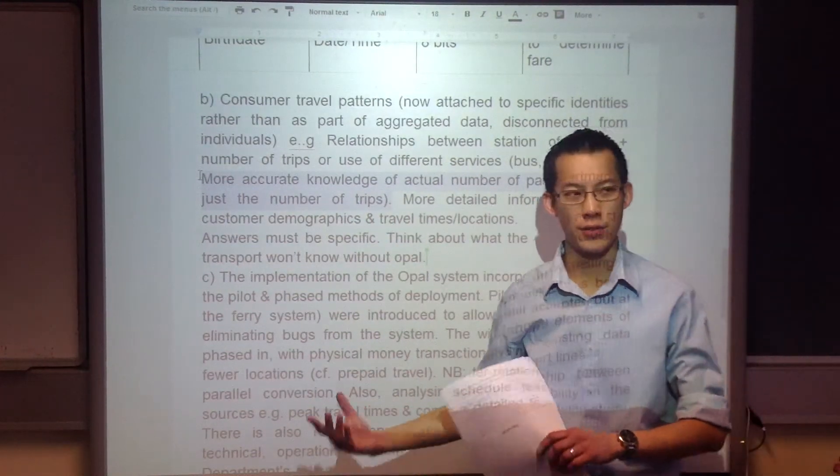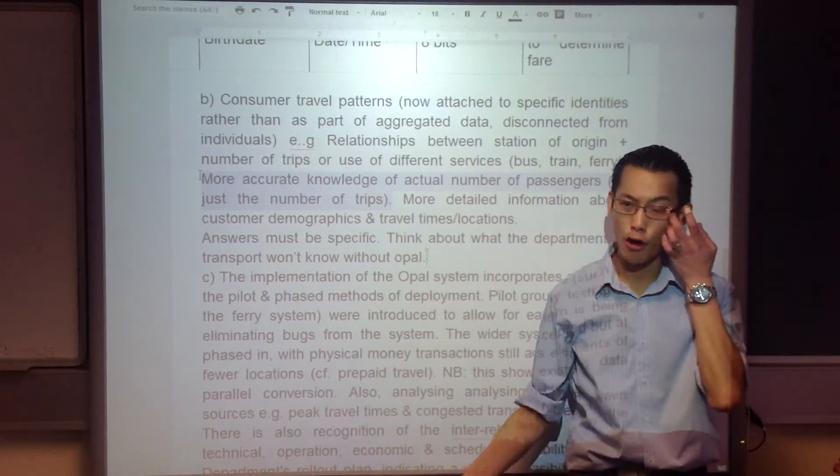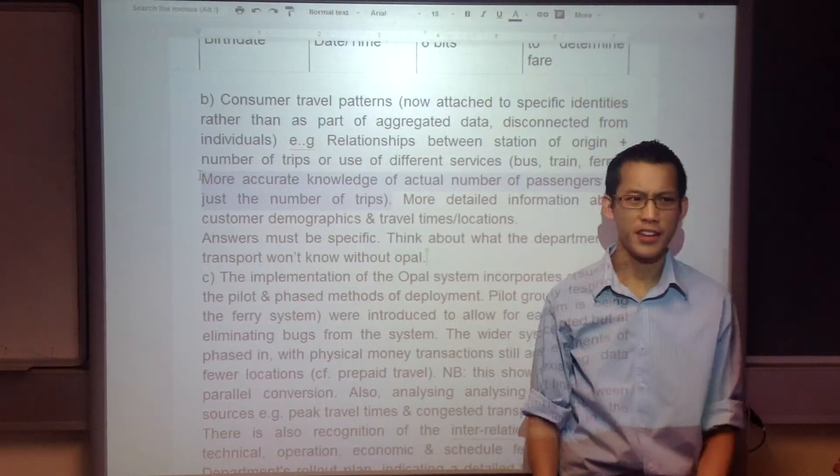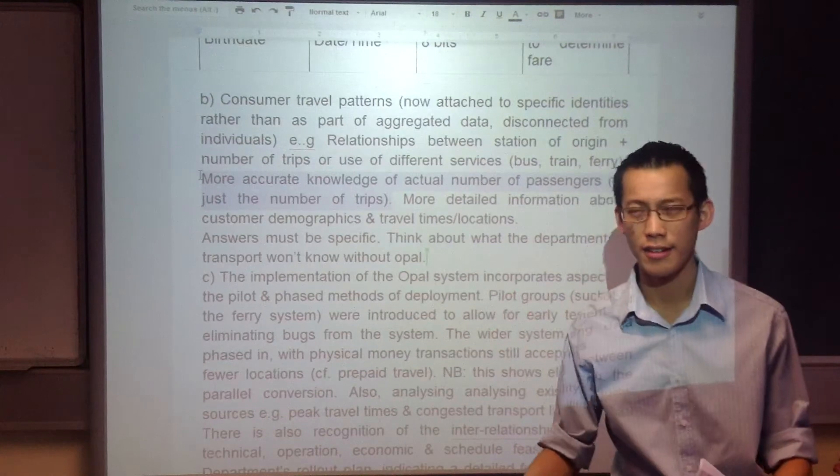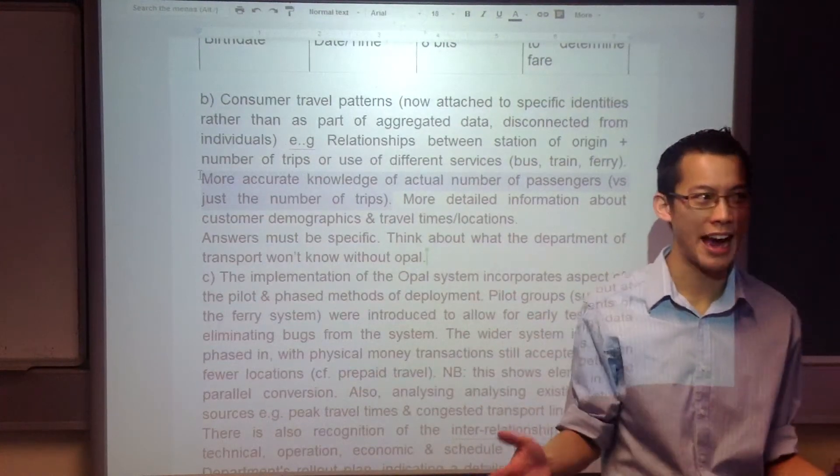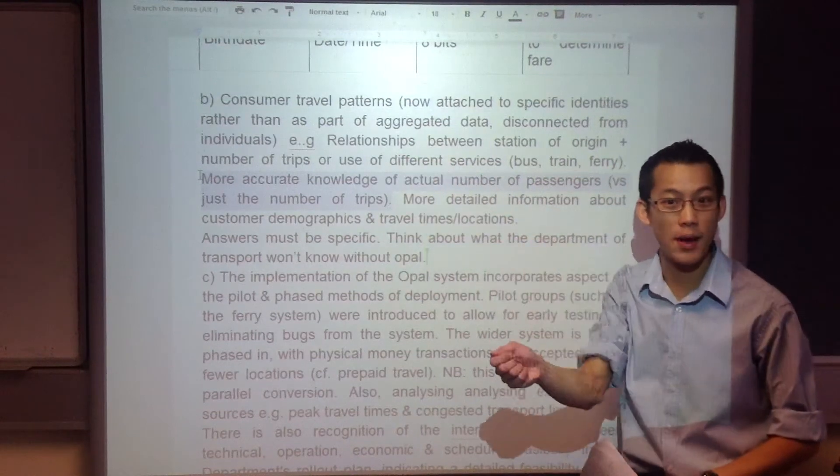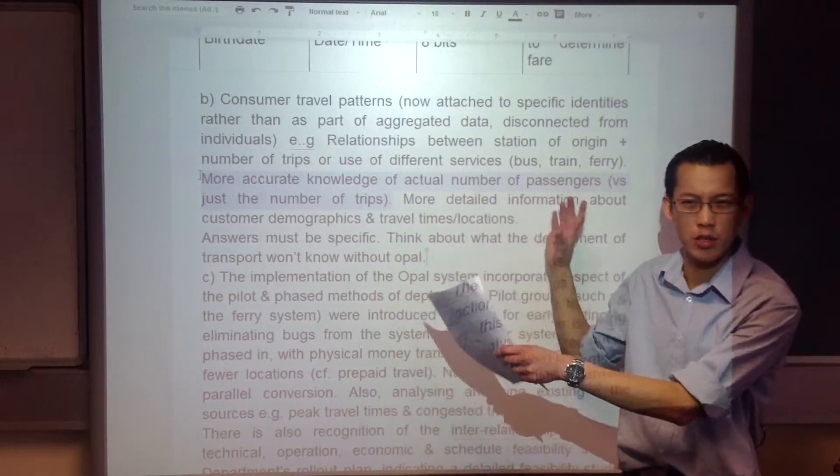This one again it has to do with being connected to an identity. So how would the Department of Transport know how many people are on their trains without Opal? They can make a good guess because they've got the number of tickets, but you're gonna do multiple tickets per person, right? So you've got to sort of scale that number of trips down to how many actual people have I got. So when you've got Opal that's one person so you're not going to get double ups and redundancy. Does that make sense, you see how this is more specific?